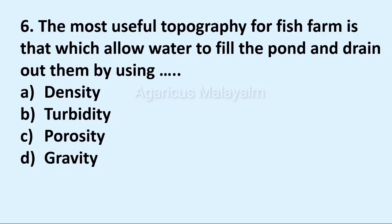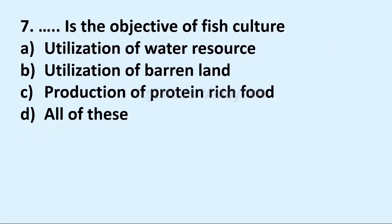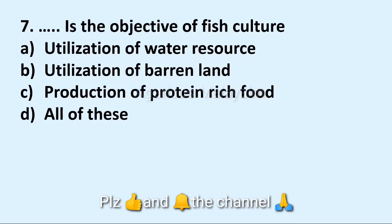Seventh question: what is the objective of fish culture? Answer options: option A, utilization of water resource; option B, utilization of barren land; option C, production of protein-rich food; option D, all of these. Correct answer: option D, all of these.